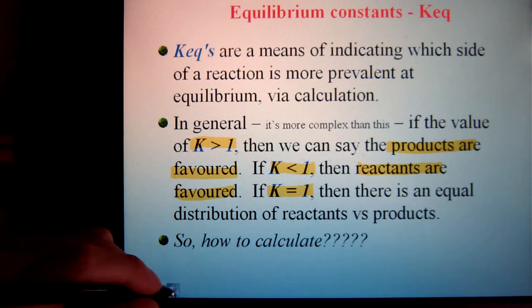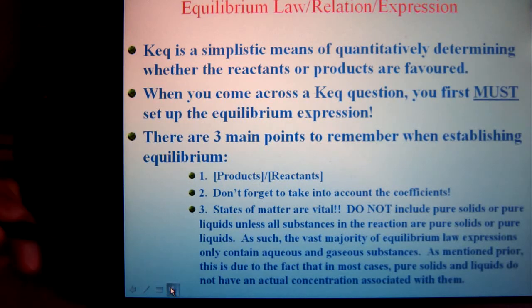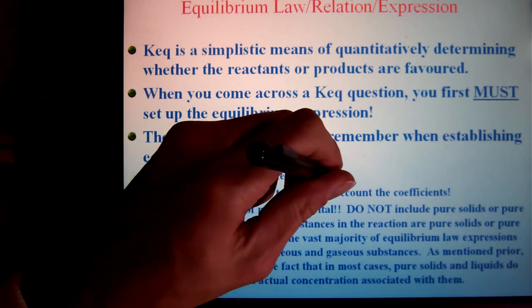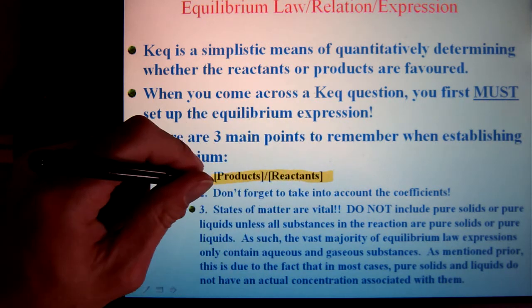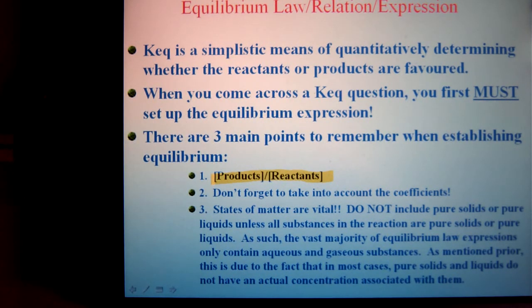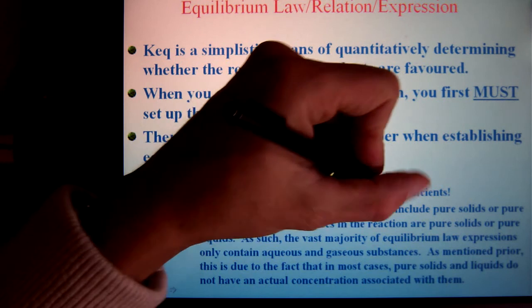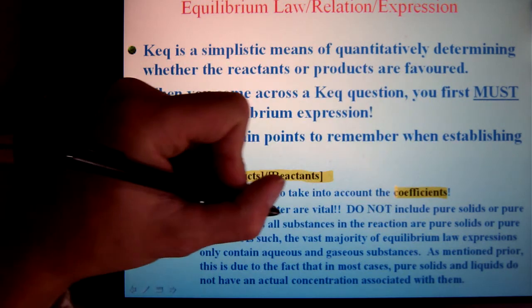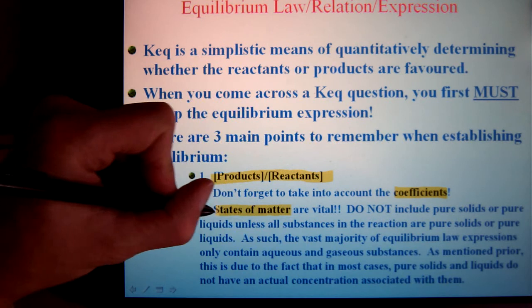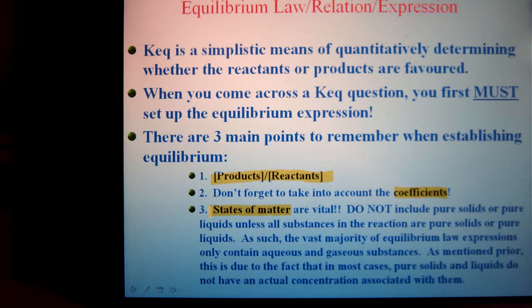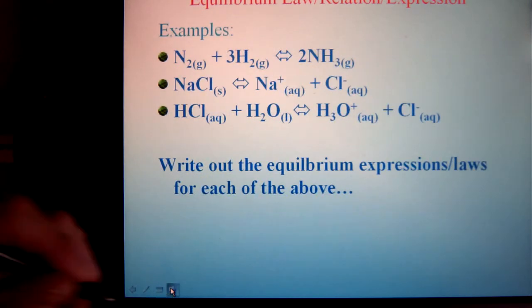So how do you calculate these things? Well, not very difficult. It's simply a ratio of the products over reactants. The things you have to be careful with, you have to remember to utilize coefficients, as well as watch your states of matter. Let's have a few examples.